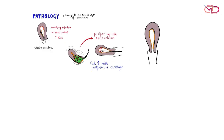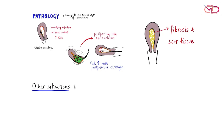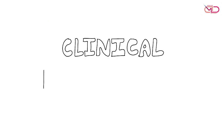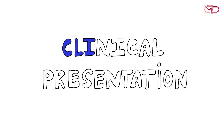Because of the damaged basalis layer, new endometrium cannot regenerate, resulting in fibrosis and scar tissue formation. Less likely, but other situations where this can happen include cesarean section, hysteroscopic myomectomy, genital tuberculosis, or schistosomiasis. The clinical presentation is varied.